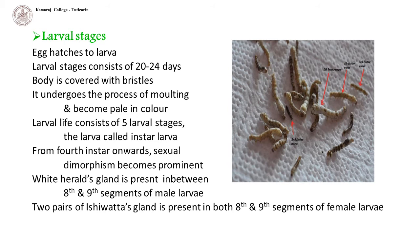Larval stages: within 10 to 12 days, a larva hatches from the eggs. Larval stages consist of 20 to 24 days. The body is covered with bristles and undergoes the process of molting, becoming pale in color. Larval life consists of 5 larval stages; the larva is called an instar larva. From the 4th instar onwards, sexual dimorphism becomes prominent. In male larvae, in the ventral aspect between the 8th and 9th segments, there is a white gland called Herold's gland, while in female larvae, both the 8th and 9th segments bear two pairs of ovarian glands.